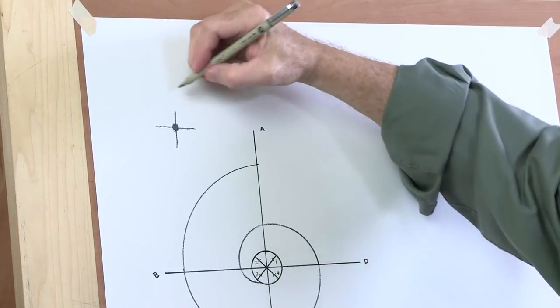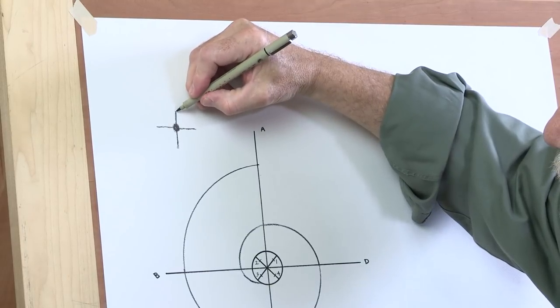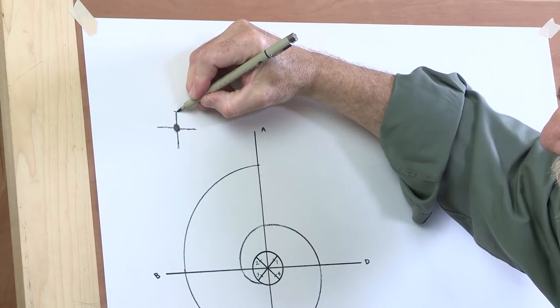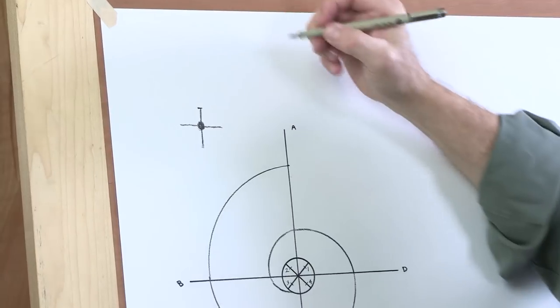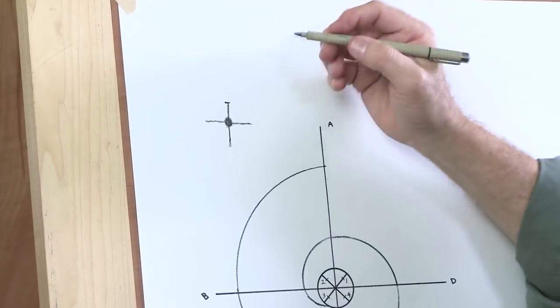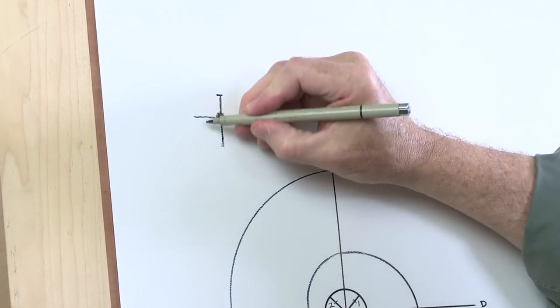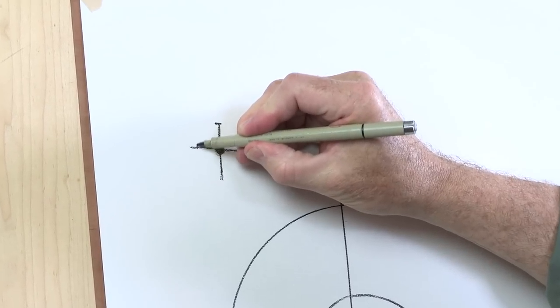Now I also want to put a reference point in here where the volute starts. That's the outer limit of the volute. Judging by eye, I make four other marks about the same distance out.